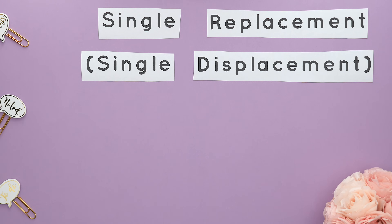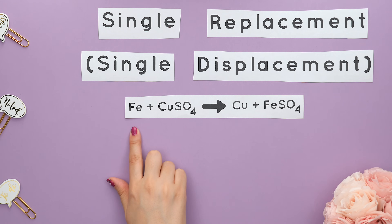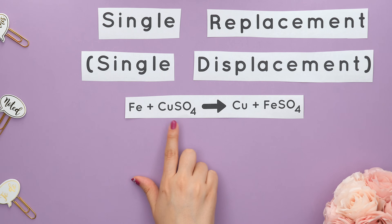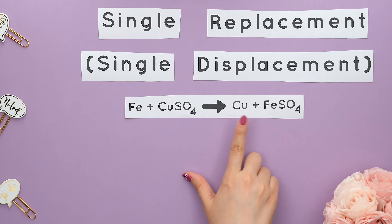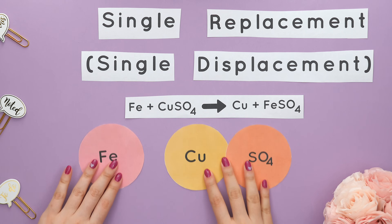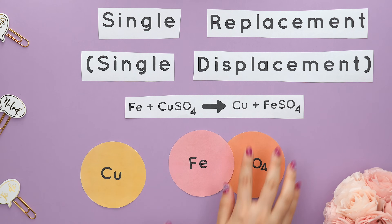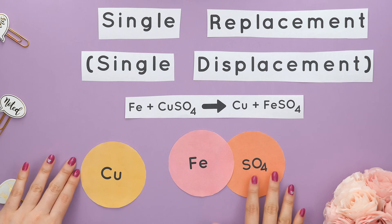The next reaction is a single replacement or a single displacement reaction. Here's an example. Our reactants are one element plus one compound, and those form one element plus another compound. Notice that we are just switching the metals to form our new products.